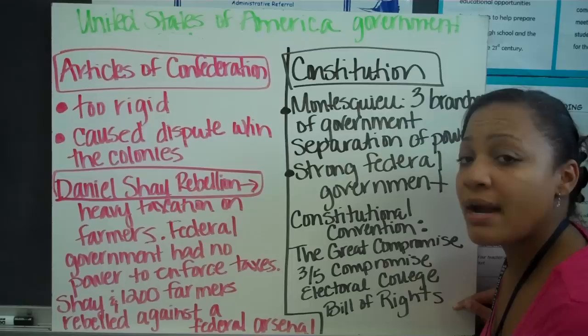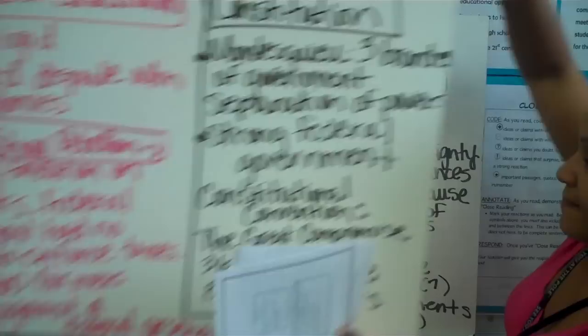We'll talk in great detail about the Bill of Rights later this week. It's our first 10 amendments to the Constitution, giving us freedom of speech, freedom of the press, freedom of religion, and the right to a speedy and public trial — all coming from the Bill of Rights.